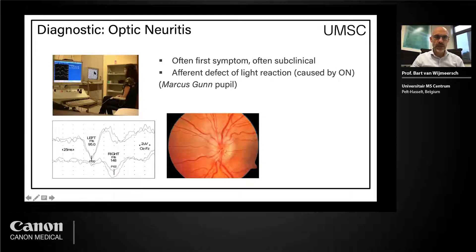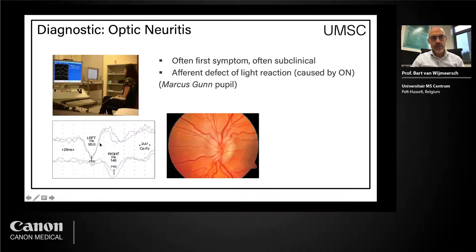The patient looks at a flickering dashboard, electrodes are placed on the occipital lobe, and you can see the electrical current in the brain — a visual evoked potential with a normal time of about 100 milliseconds. But in an affected eye it's 148 milliseconds, which is slow as a cause of demyelination. Sometimes you see a lot of edema in the papillar region.